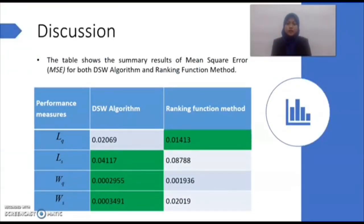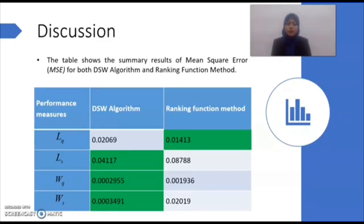As for the discussion, this table shows the summary results of mean square error (MSE) for both methods. As you can see, for LQ, the MSE value for the ranking function method is lower compared to the DSW algorithm. However, for the rest — LS, WQ, and WS — the MSE value for the DSW algorithm is lower compared to the ranking function method. As a result, the lowest overall MSE value belongs to the DSW algorithm.